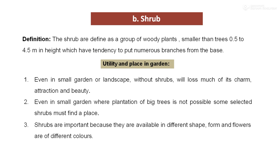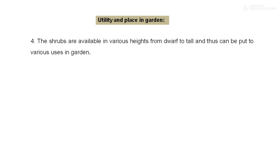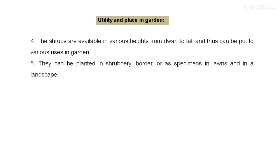Shrubs are important because they are available in different shapes, forms, and colors, and that is why they have great importance in a garden. Shrubs are available in various heights, from dwarf to tall, and thus can be put to various uses in a garden. They can be planted in a shrubbery border, or as a specimen in a lawn or in a landscape, acting as a marvelous piece or as a focal point in a garden.